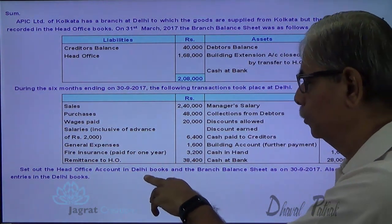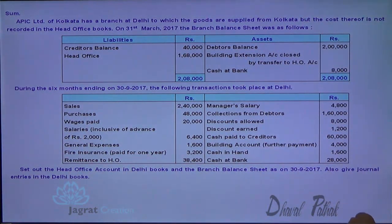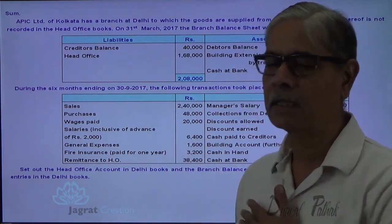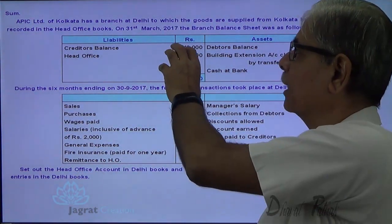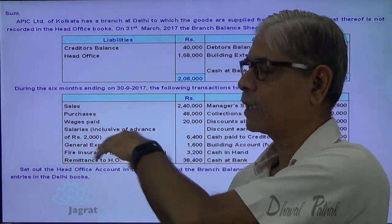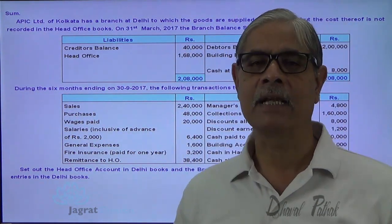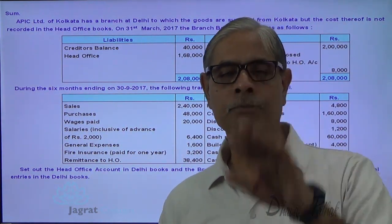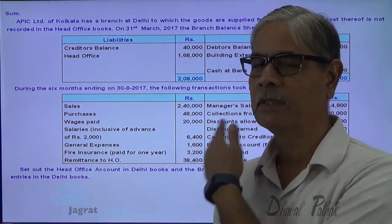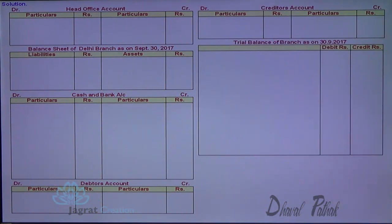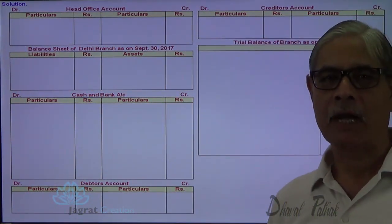We are required to set out the head office accounts in the Delhi books, prepare the branch balance sheet as on 30th September 2017, and also give the journal entries in the Delhi books. This is the opening balance sheet of the branch. These are the transactions. First of all, I will record the transactions, and based on the changing balances, I will proceed with the sum. These are the various accounts that I have prepared.